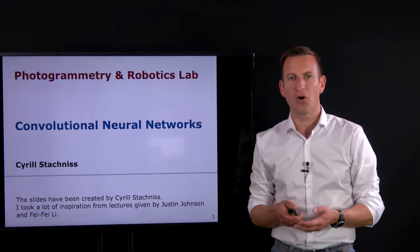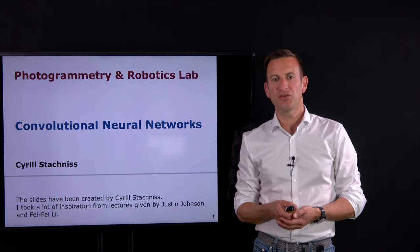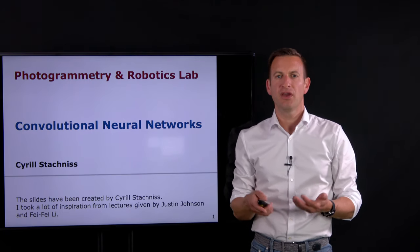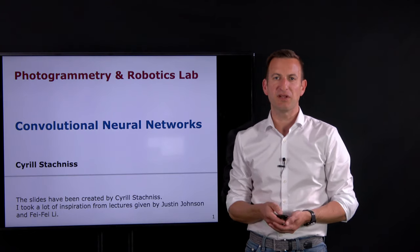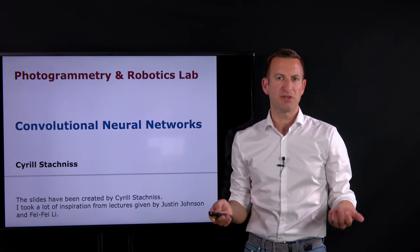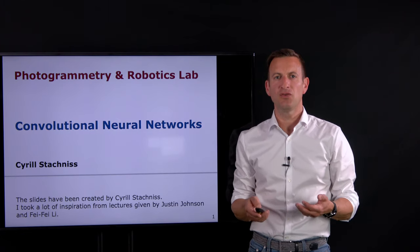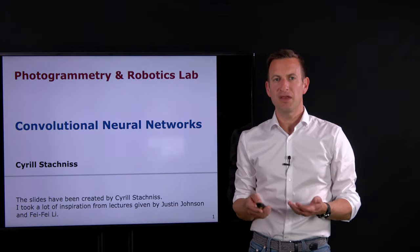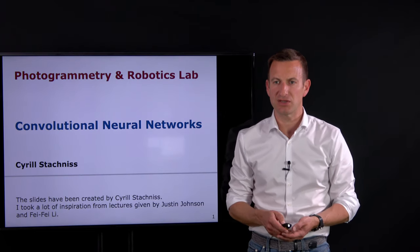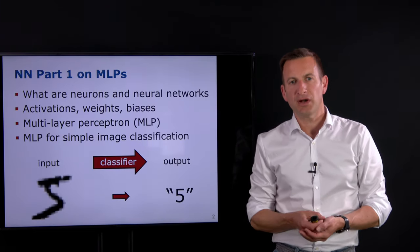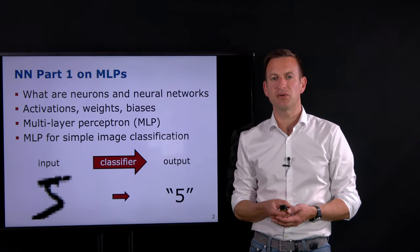Welcome to another lecture on neural networks. Today I want to discuss convolutional neural networks, which are a type of network frequently used especially in computer vision or photogrammetry tasks, where the input to our system is actually an image or 2D structure similar to an image. This is the third part of a lecture on neural networks.